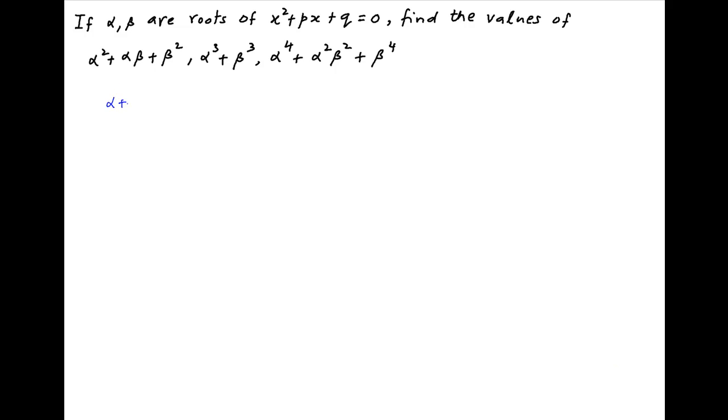The sum of the roots of the given quadratic equation, alpha plus beta, is equal to minus P, and the product of the roots, alpha beta, is equal to Q.